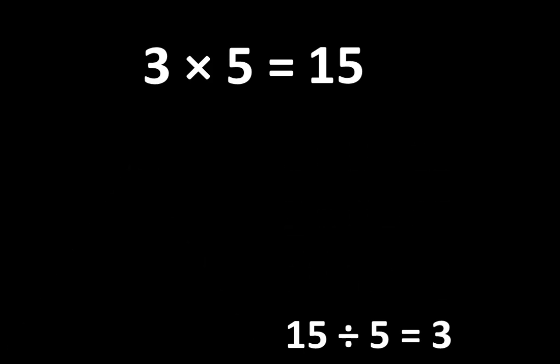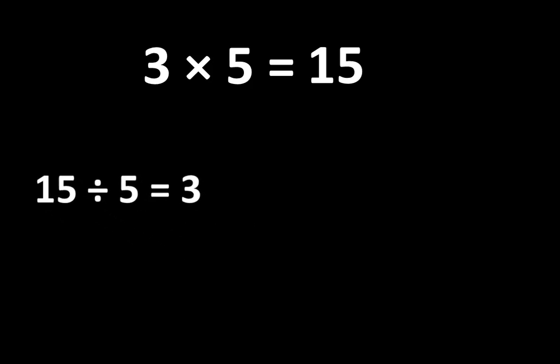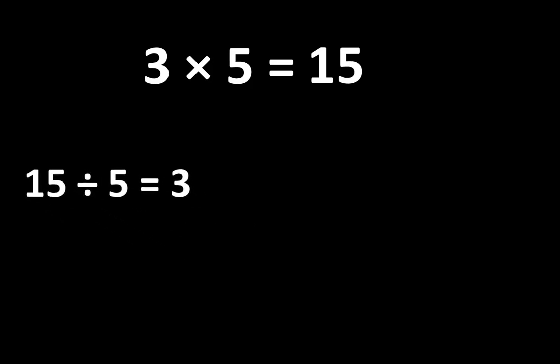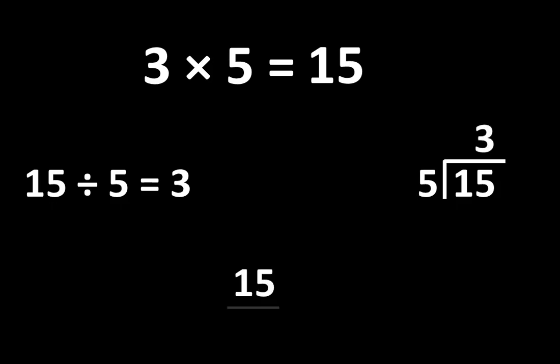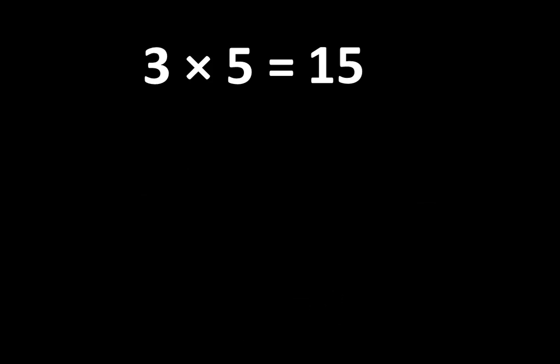If we look at 15 divided by 5 is equal to 3, we can see that there are several different ways to write this idea. We can write 15 divided by 5 is equal to 3, or we can write it using fraction notation — 15 divided by 5 is equal to 3 — and that can be very useful. So understanding 3 times 5 is more than simply knowing that the product is 15.